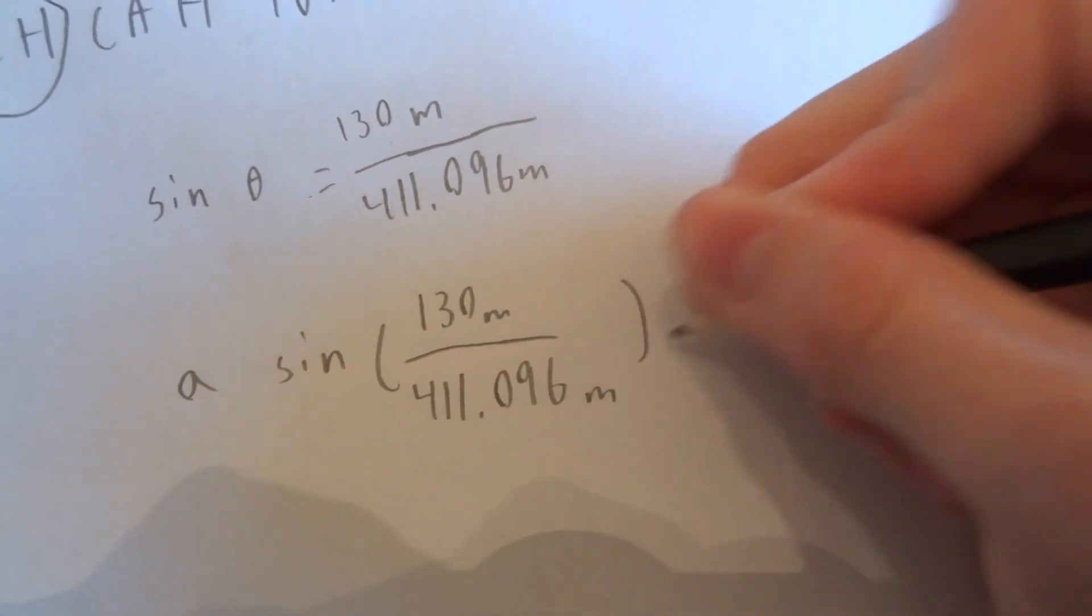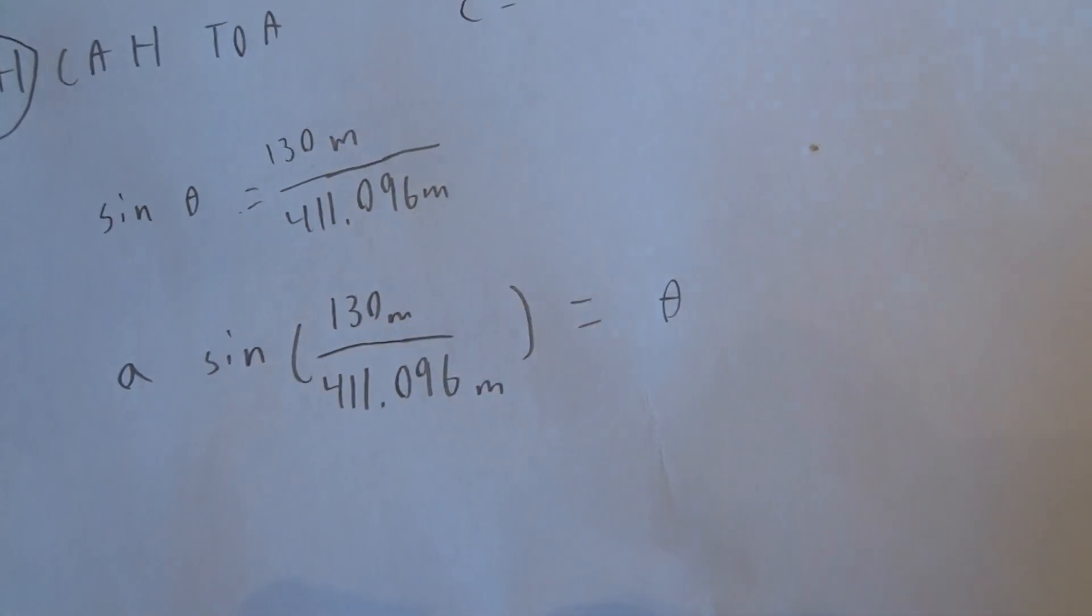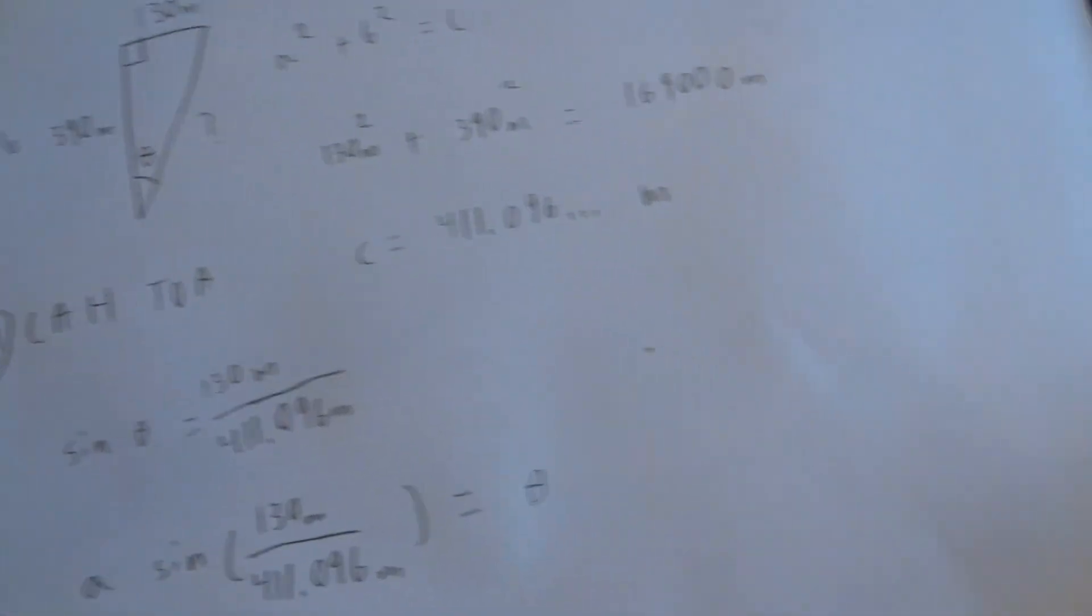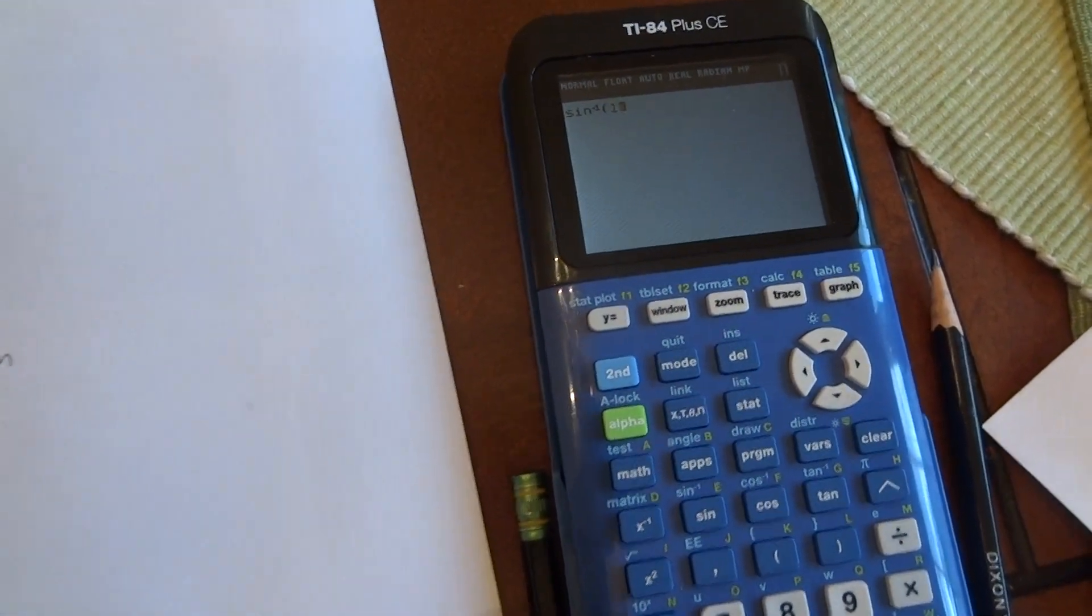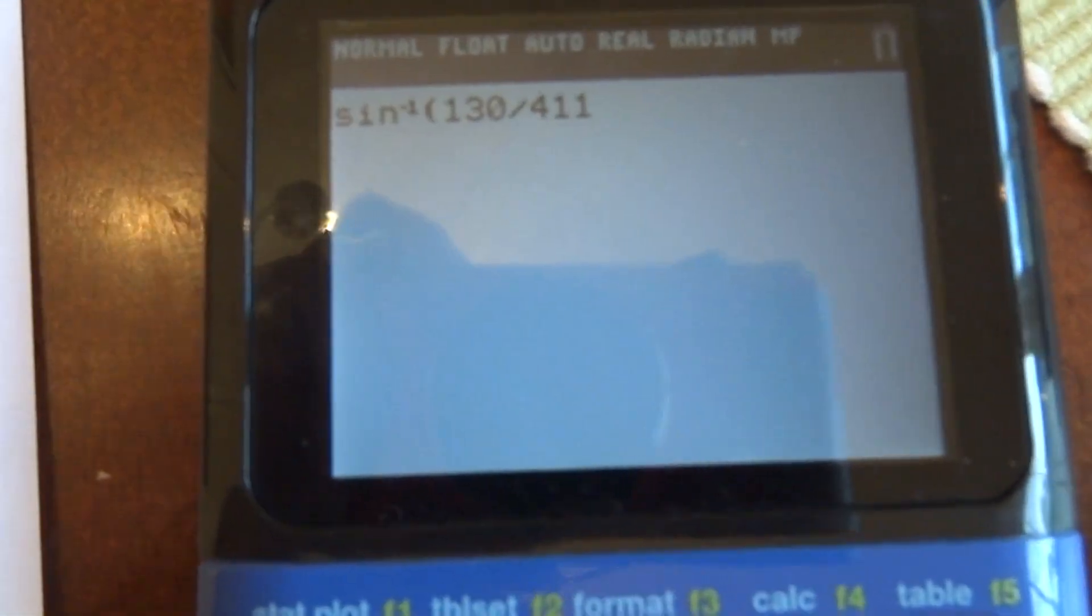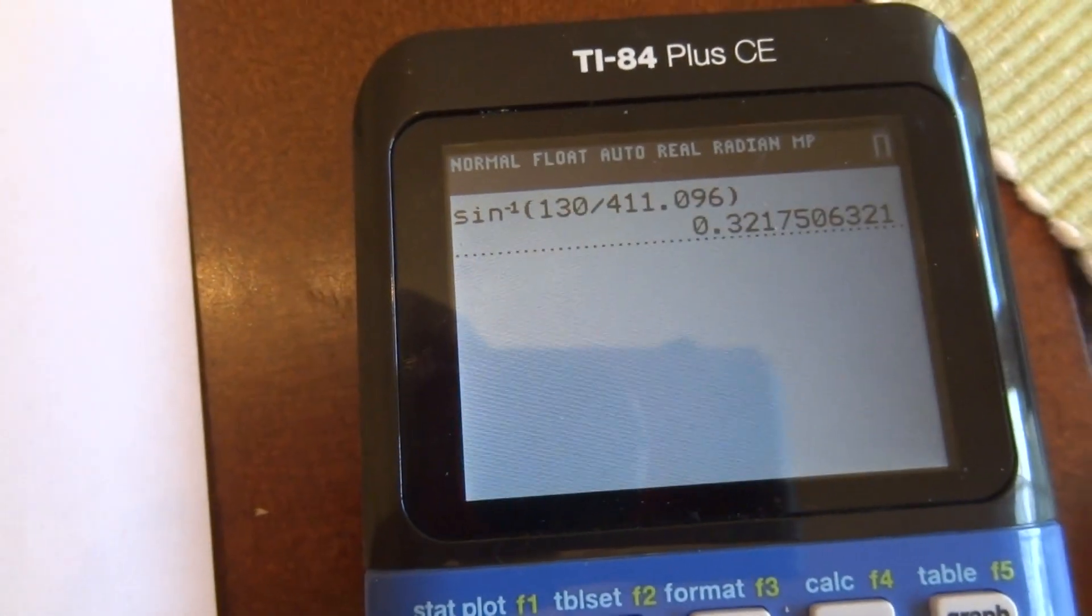And that will give us theta in radians, so just put this into a calculator. That's arc sine on this calculator and we get that number in radians.